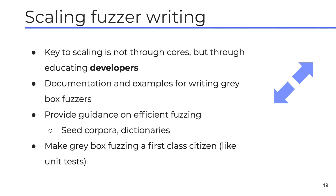The key to scaling fuzzing is not through just throwing more cores at the problem, but actually through educating developers. Our team has a very modest number of five security engineers, but we are responsible for fuzzing almost all of Google. To get developers to write fuzzers, you have to remove as much friction as possible — writing good documentation, good examples, build system support. You want to make gray box fuzzing through LibFuzzer or AFL a first-class citizen in the development process, as ubiquitous as writing a unit test. Developers are often better at writing fuzzers than security engineers because they understand their own code better.